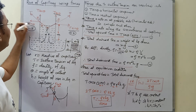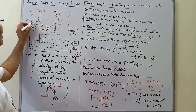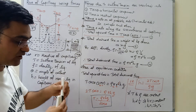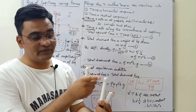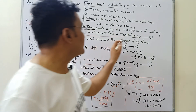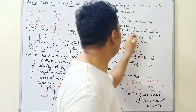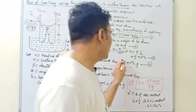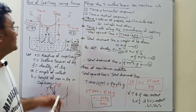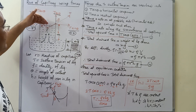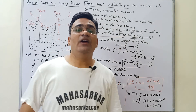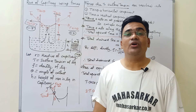Two important points to note: T sin theta (the horizontal component) cancels because equal and opposite forces act on all sides of the capillary. T cos theta (the vertical component) acts along the entire circumference of the capillary from all sides, giving total upward force = 2πr × T cos theta. The downward force is rho × πr²hg. At equilibrium, the upward surface tension force balances the gravitational weight of the liquid column, giving us our formula. Thanks for watching — mahasarka.co.in. Have a nice day.